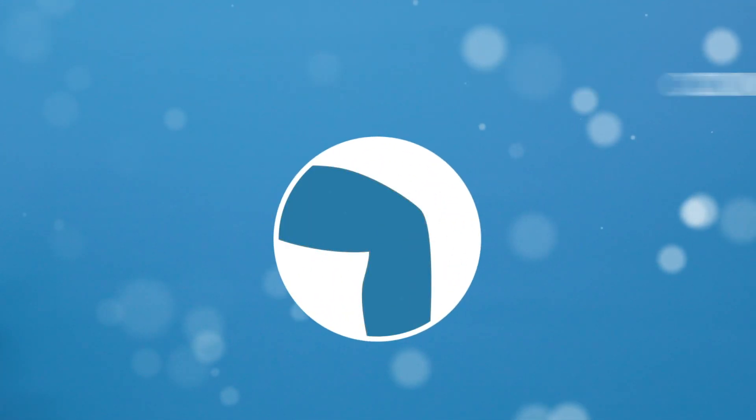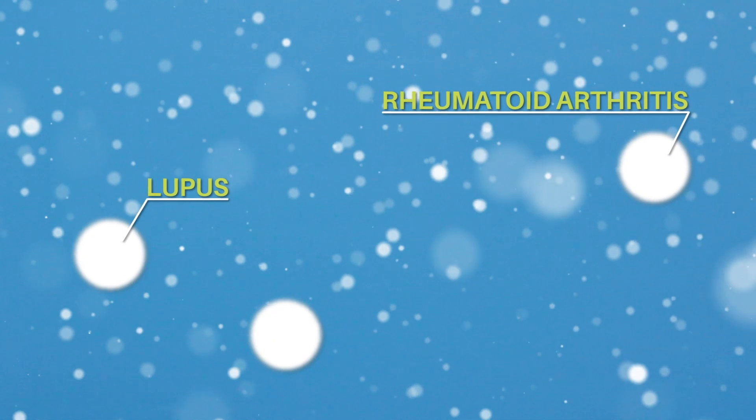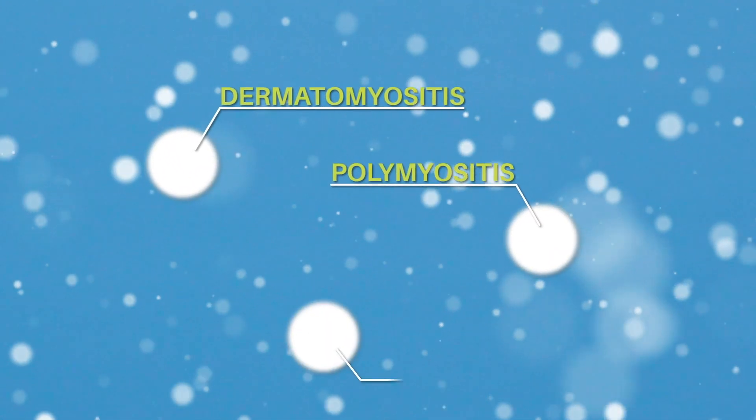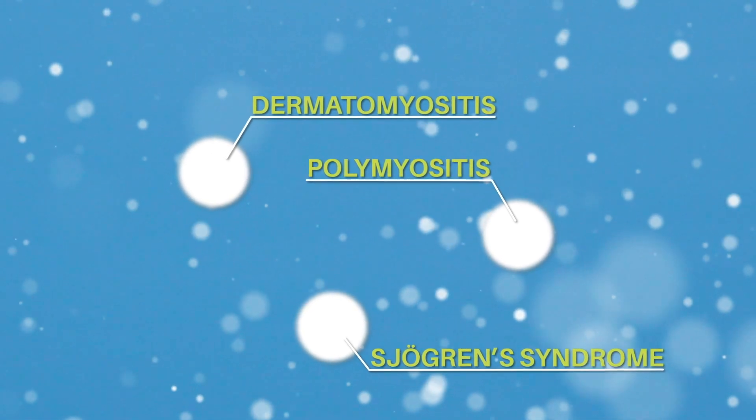The autoimmune diseases most commonly associated with interstitial lung disease are lupus, rheumatoid arthritis, systemic sclerosis, dermatomyositis or polymyositis, and Sjogren's syndrome. Although we may associate these diseases with specific organs, such as rheumatoid arthritis and joint disease, they can affect other organs including the lungs.